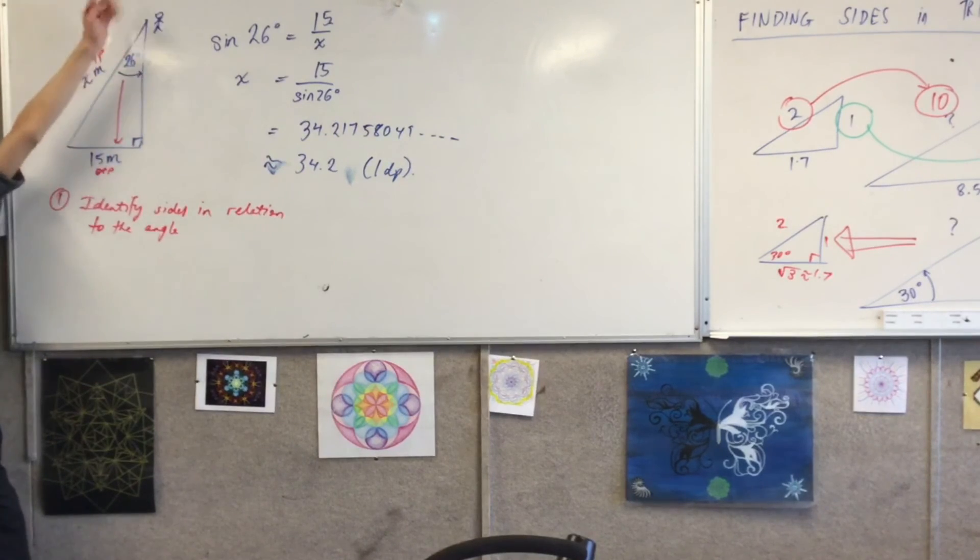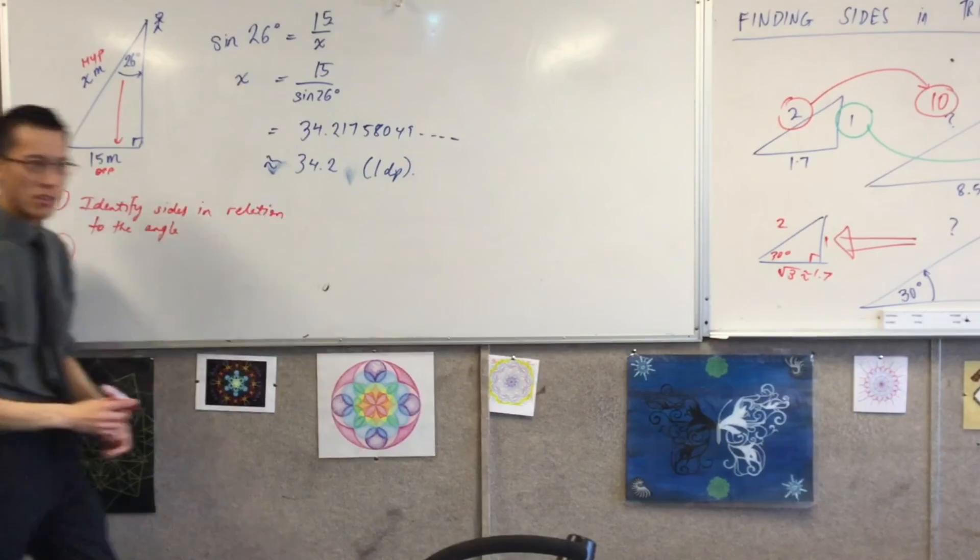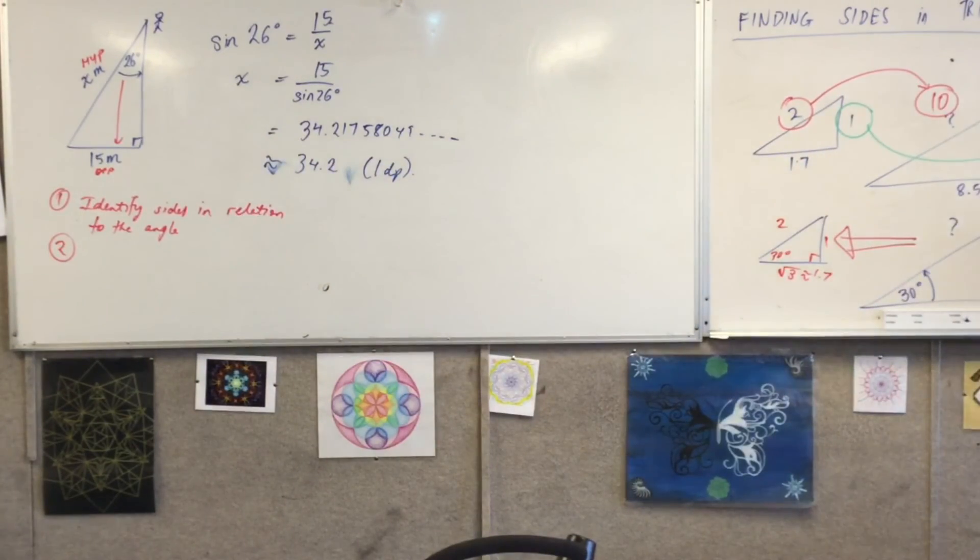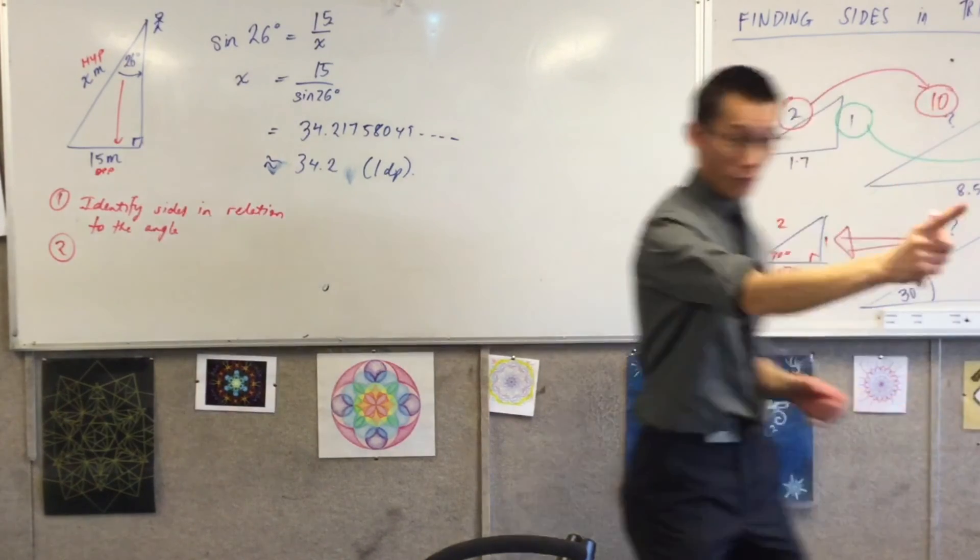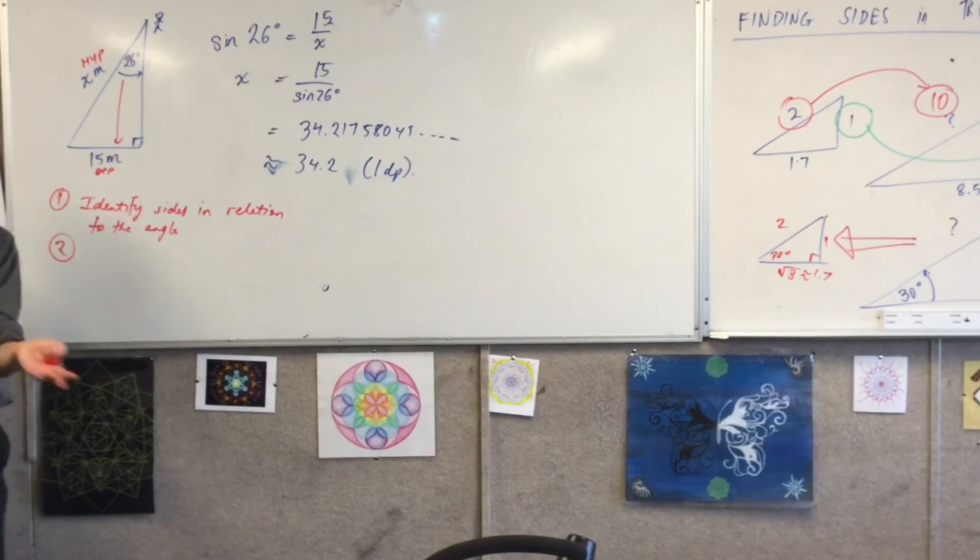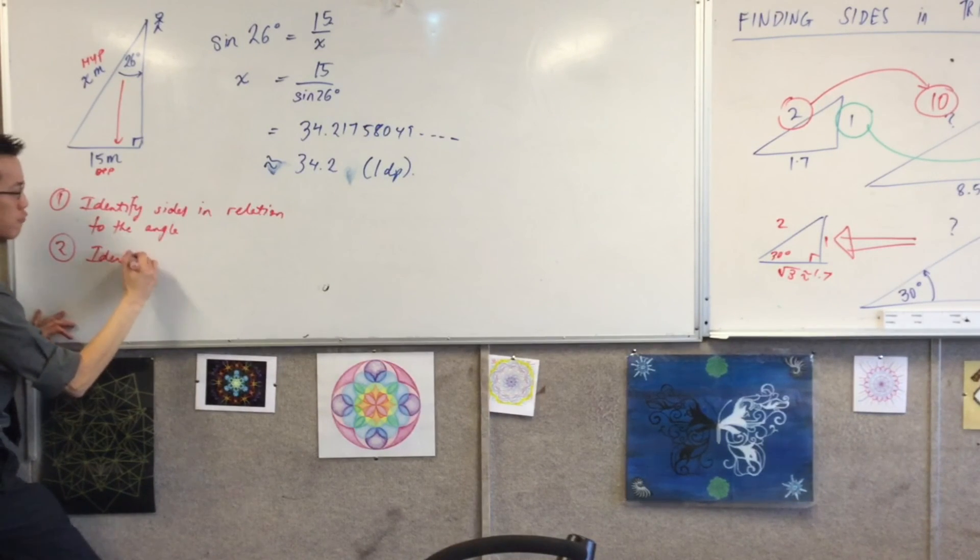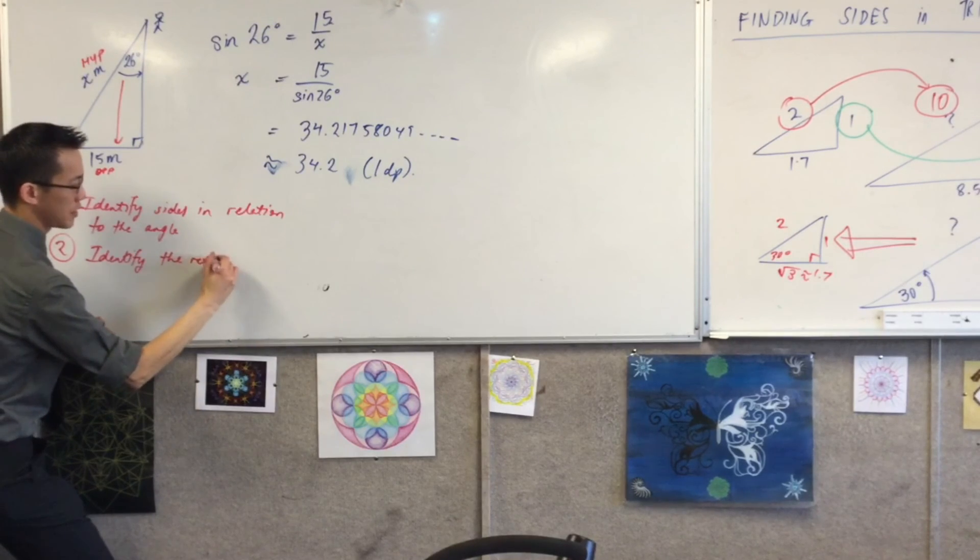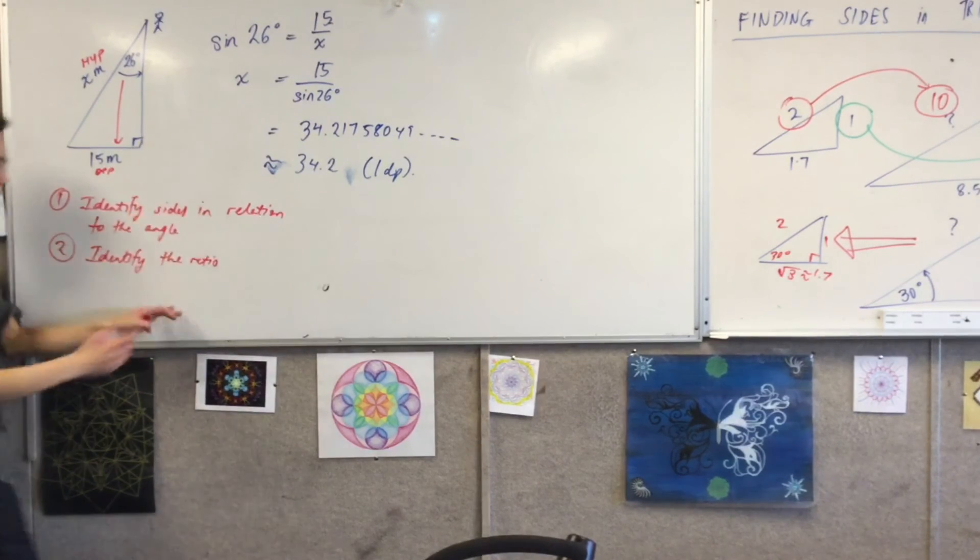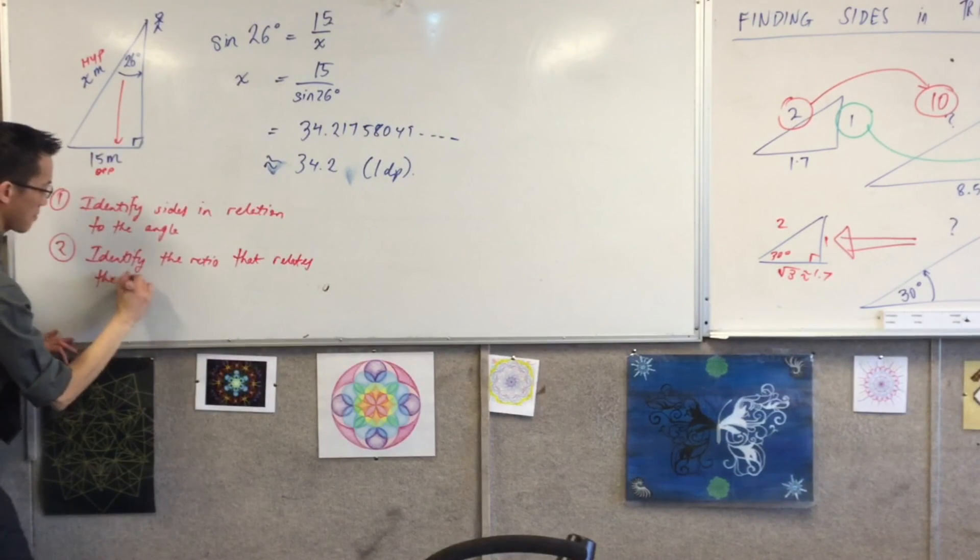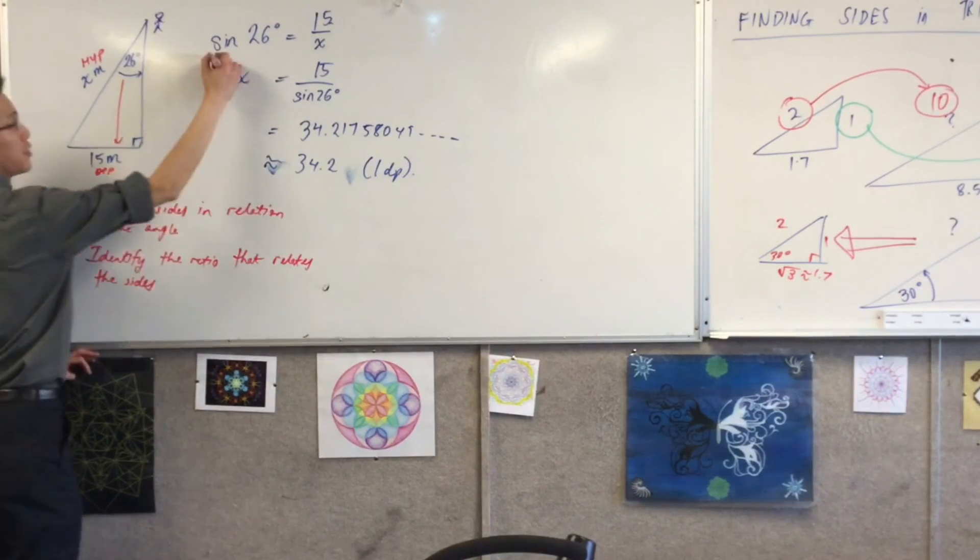What you want to do is say, well, opposite, hypotenuse, adjacent, which one is which, right? So identify the sides in relation to the angle, okay? And that's the angle up there, that's why I drew my man over there. Step two, once I knew that they were opposite and hypotenuse, what did I do with that knowledge? What did I do with that knowledge, think, think? It's when I started writing the equation. Very good, I thought, okay, sine, cos, tan, which one is going to connect the sides I've got? Seeing as it's opposite of hypotenuse, what I want is to identify the ratio, sine, cos, or tan, that connects the sides or that relates the sides together.